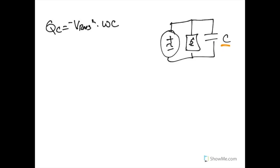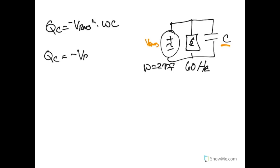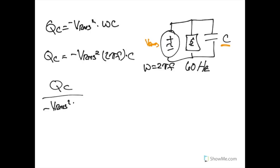We know VRMS from the voltage source. The frequency in hertz becomes ω = 2π times frequency, and we assume 60 hertz for a US source. Rewriting all values as Qc = -VRMS² × 2πf × C, and rearranging in terms of C.